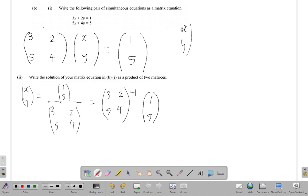The solution x,y is equal to the inverse of three two five four, three two five four inverse, multiplied by one five.